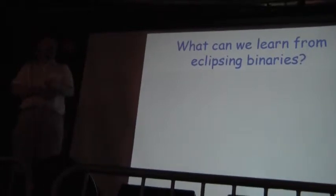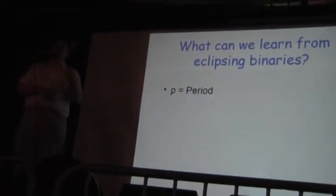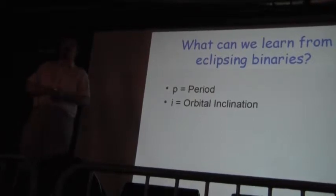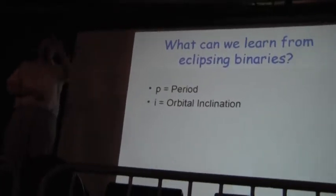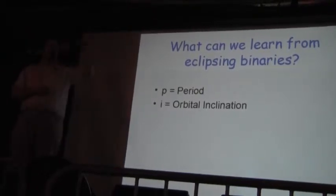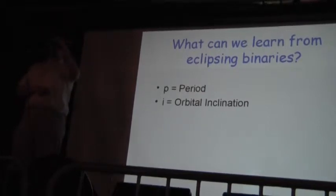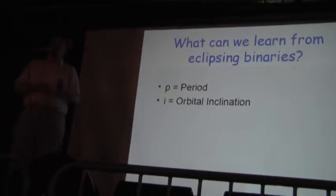So, what can we learn from eclipsing binary stars? Well, the period, the amount of time it takes the stars to orbit their mutual center of mass. Their inclination with our line of sight, not all planetary or binary systems will be exactly in line with the plane of the sky. Some will be flat on like a pancake, some will be edge on. Those are the ones that we get to see.